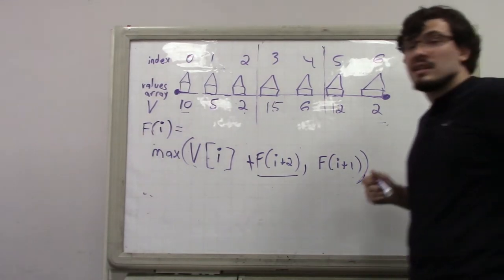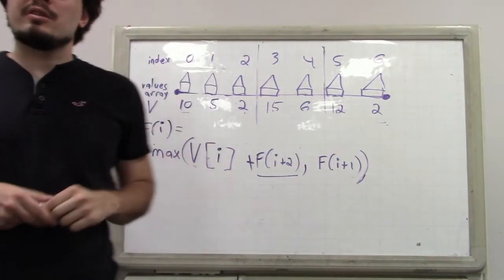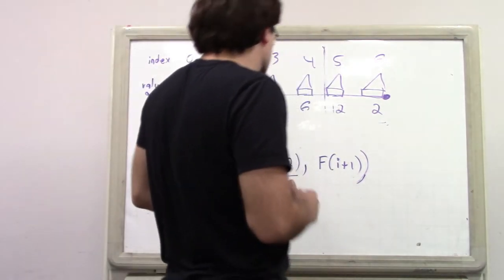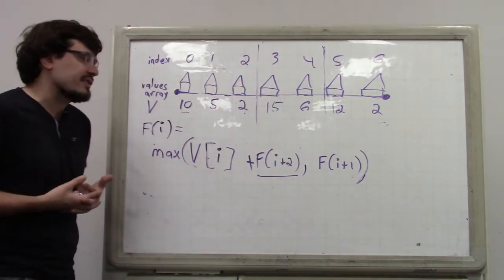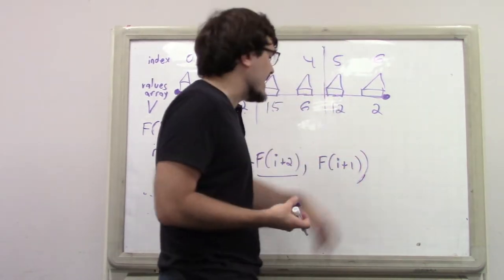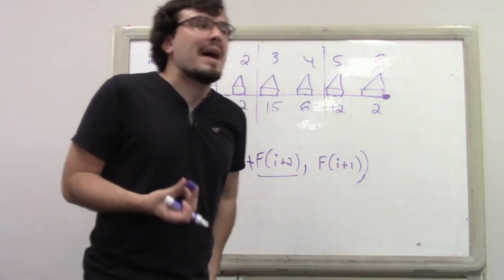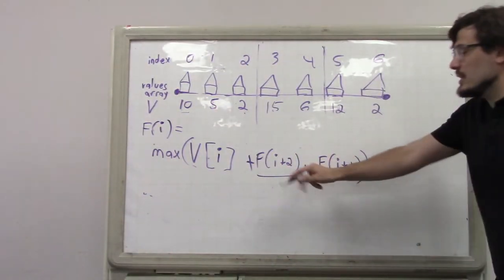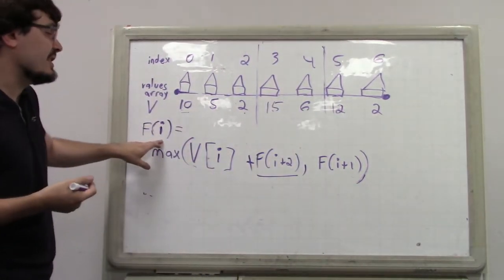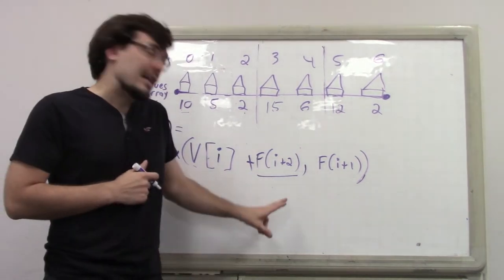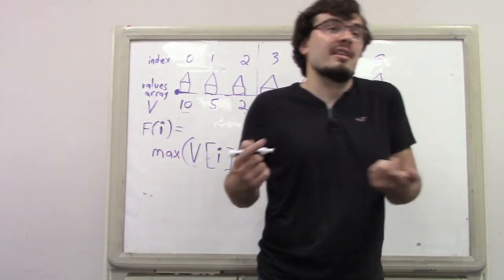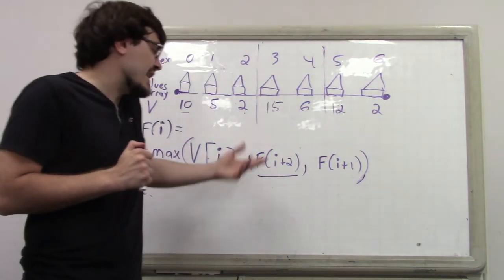Now the next question: how do we solve this recursion? There are basically two options — dynamic programming or plain old recursion. The base case: if i is greater than or equal to n, then F(i) equals zero. This means whatever you did put you past the end, you have no more houses, and your payoff is zero. Otherwise, if i is in bounds, we apply the general formula. Even if i is in bounds, i+2 could be out of bounds, which is fine — out-of-bounds just evaluates to zero by the base case.